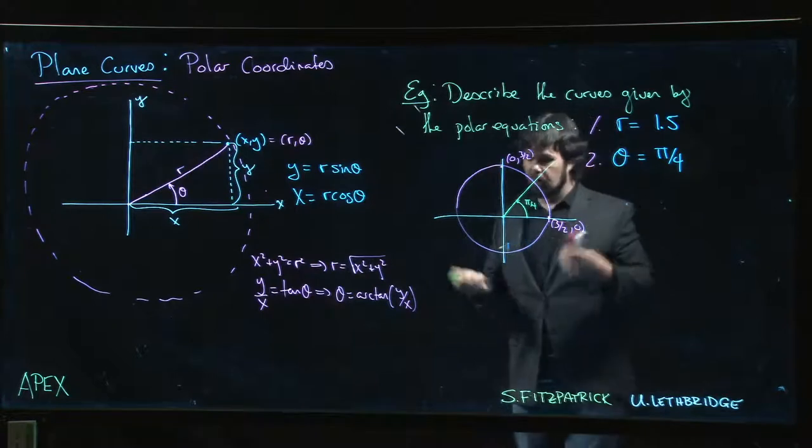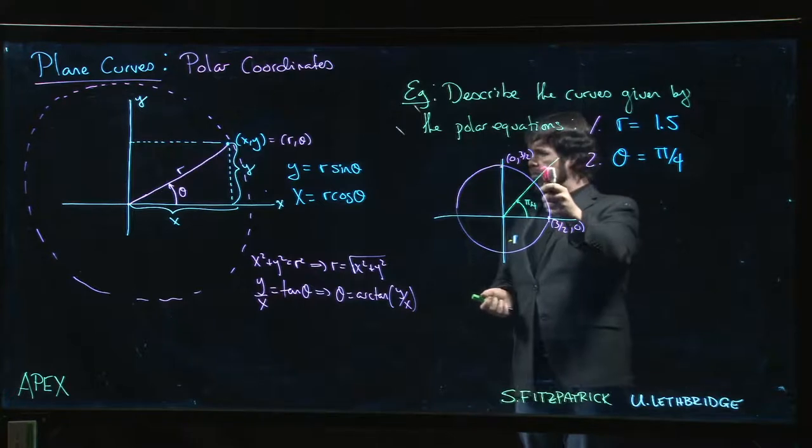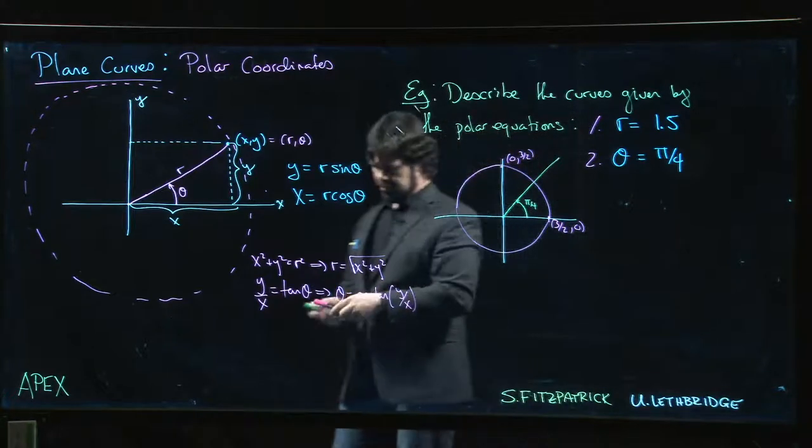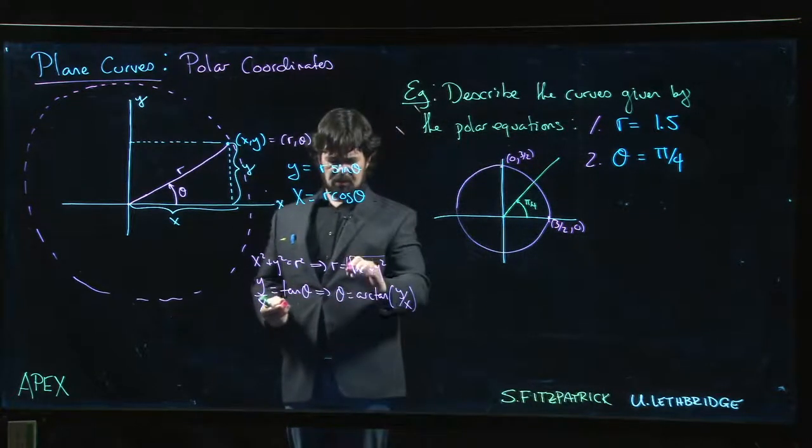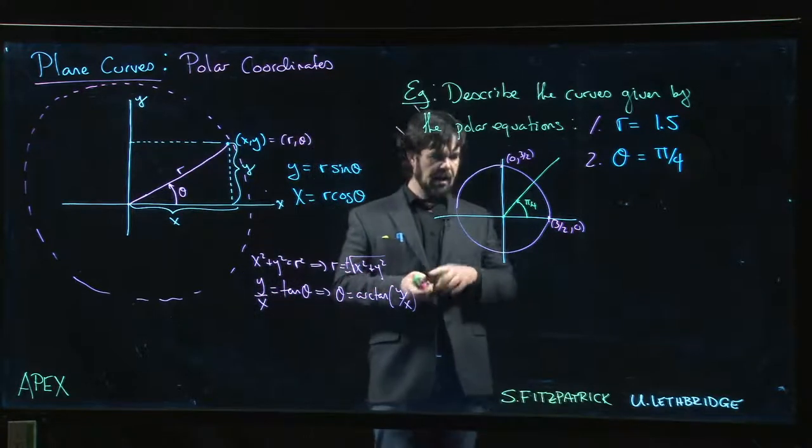So R = 0 is the origin. There is no angle associated to that. But we do allow R to be negative. We will let R be plus or minus that square root, and a negative value for R just lets you go the other way along that same ray.